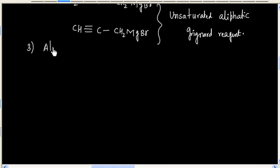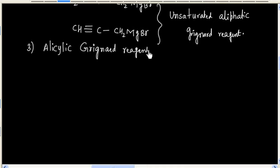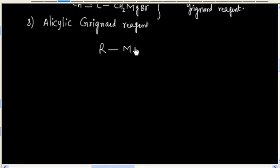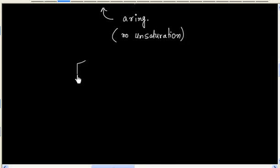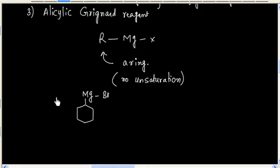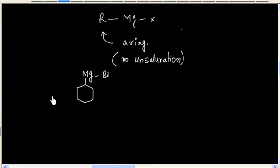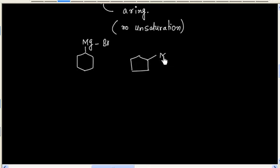Next, we can have the alicyclic Grignard reagent. In this case, R contains a ring, but there is no double bond inside the ring — so no unsaturation. For example, this is an alicyclic Grignard reagent. We can also have a 5-membered ring, which is also an alicyclic Grignard reagent.